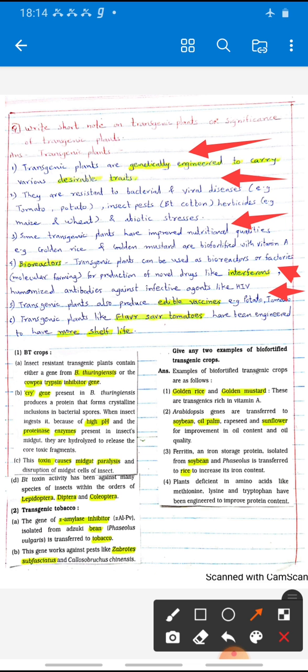Some transgenic plants are used as edible vaccines, for example potato and tomato, which are produced with the help of genetic engineering. They are used against diseases, so they are edible vaccine transgenic plants.